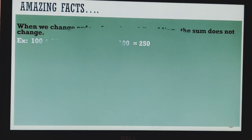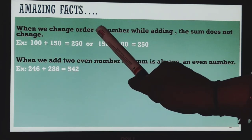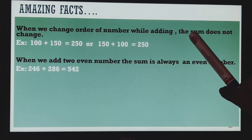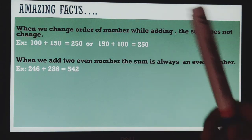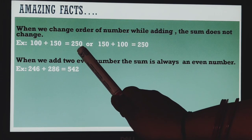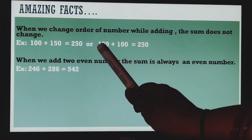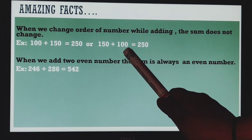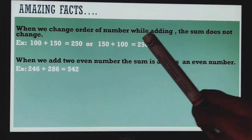See, this is the fact. This thing you have to keep in your mind. When we change order of the numbers while adding, the sum does not change. When you are adding 100 plus 150, we will get answer 250. Or if we will do the exchanging of the order as 150 plus 100, then also you will get the same answer.